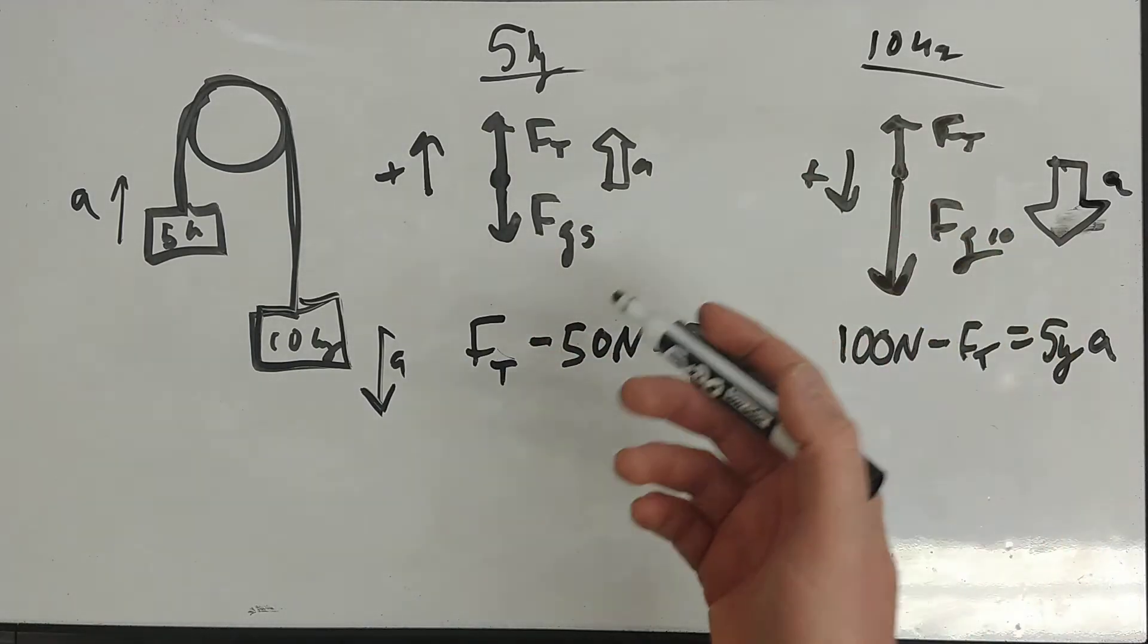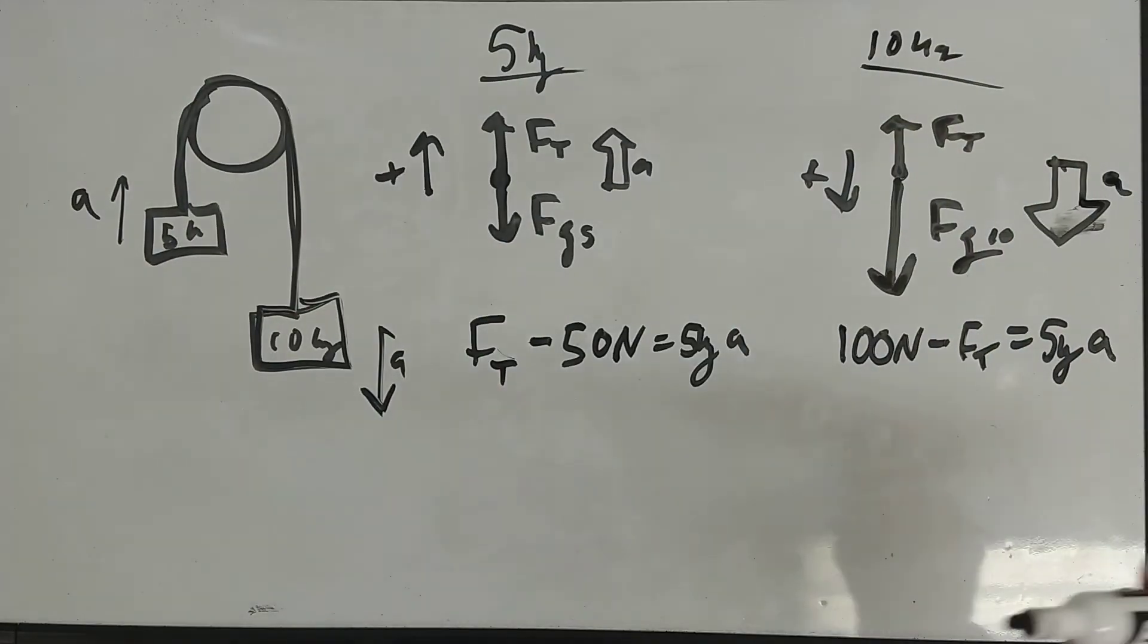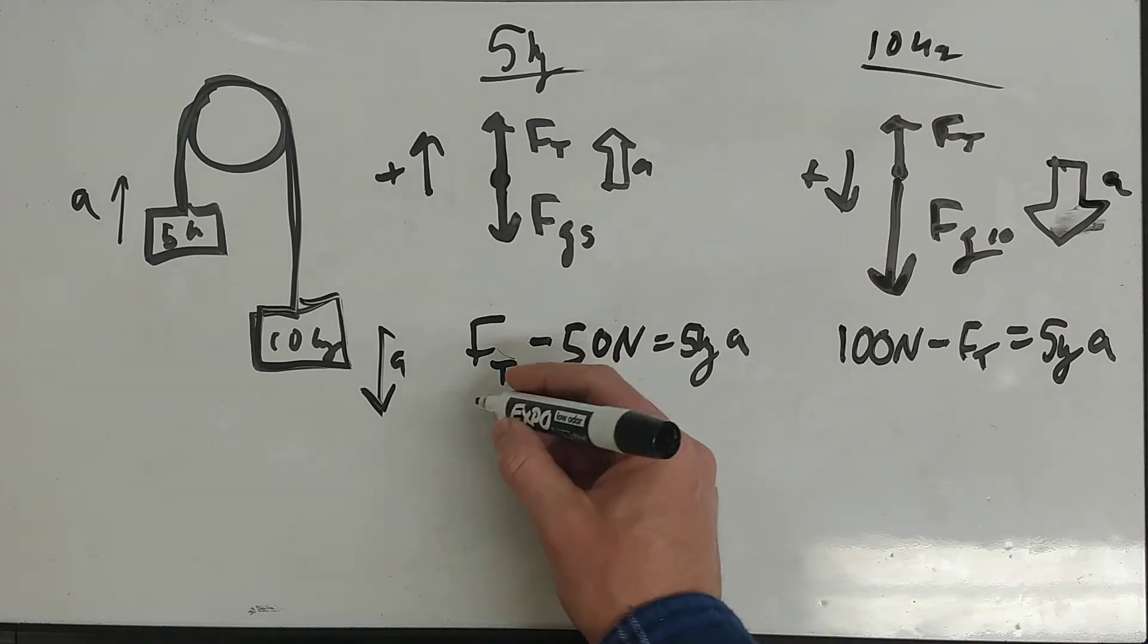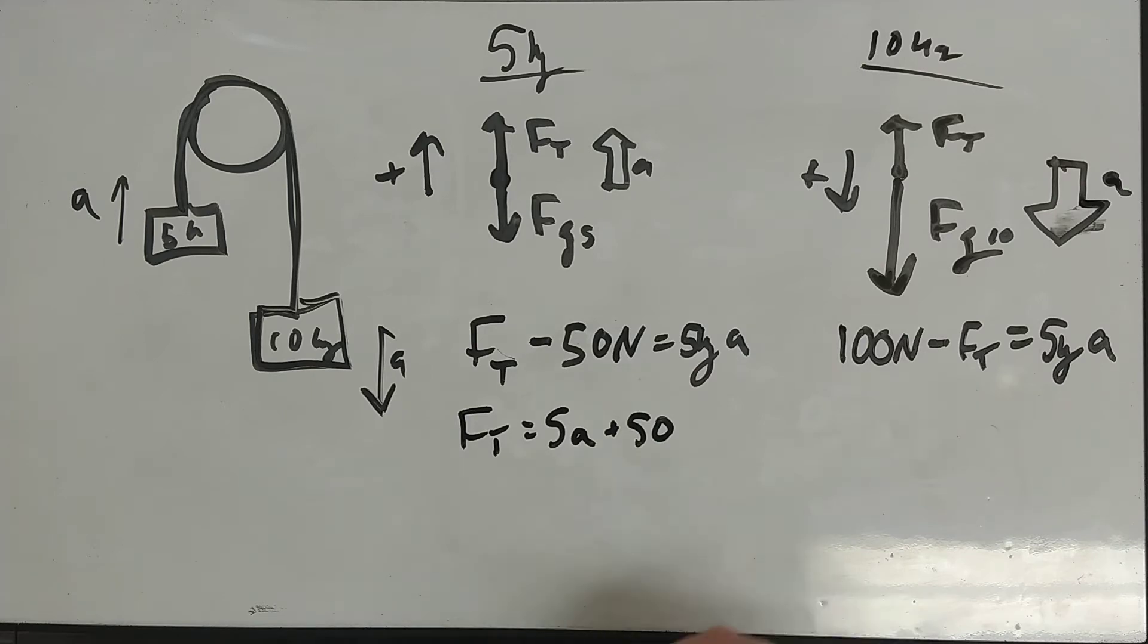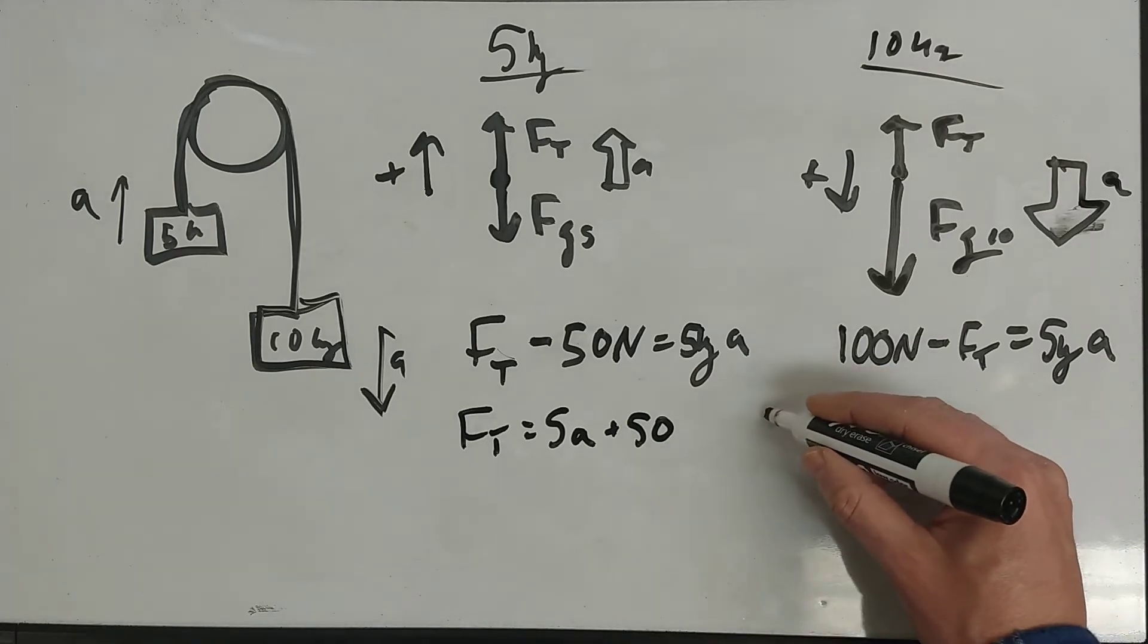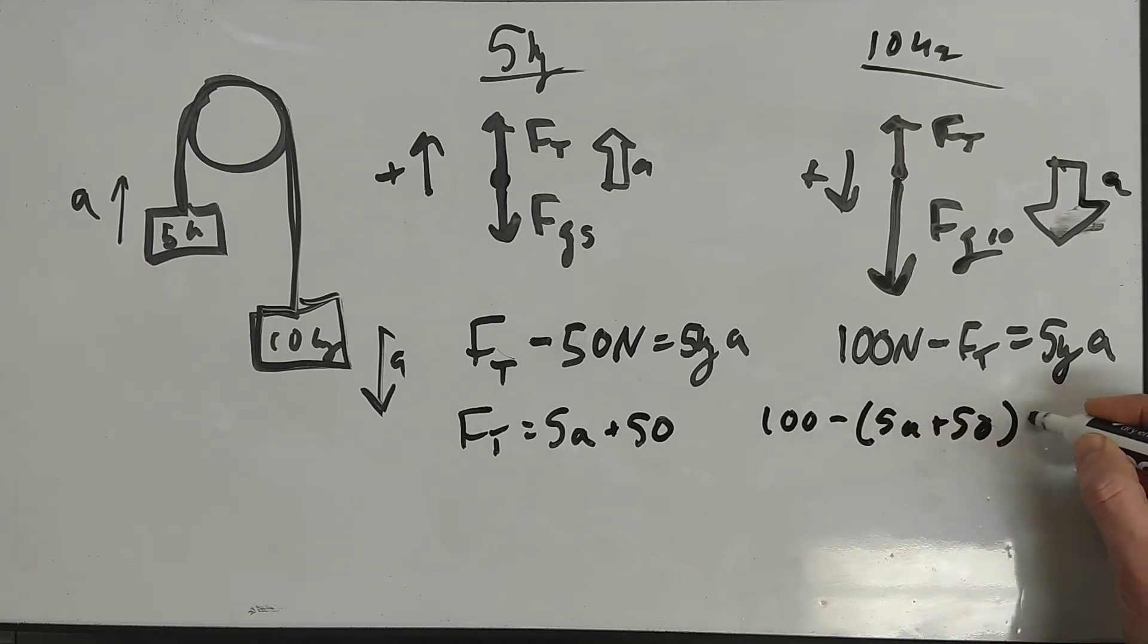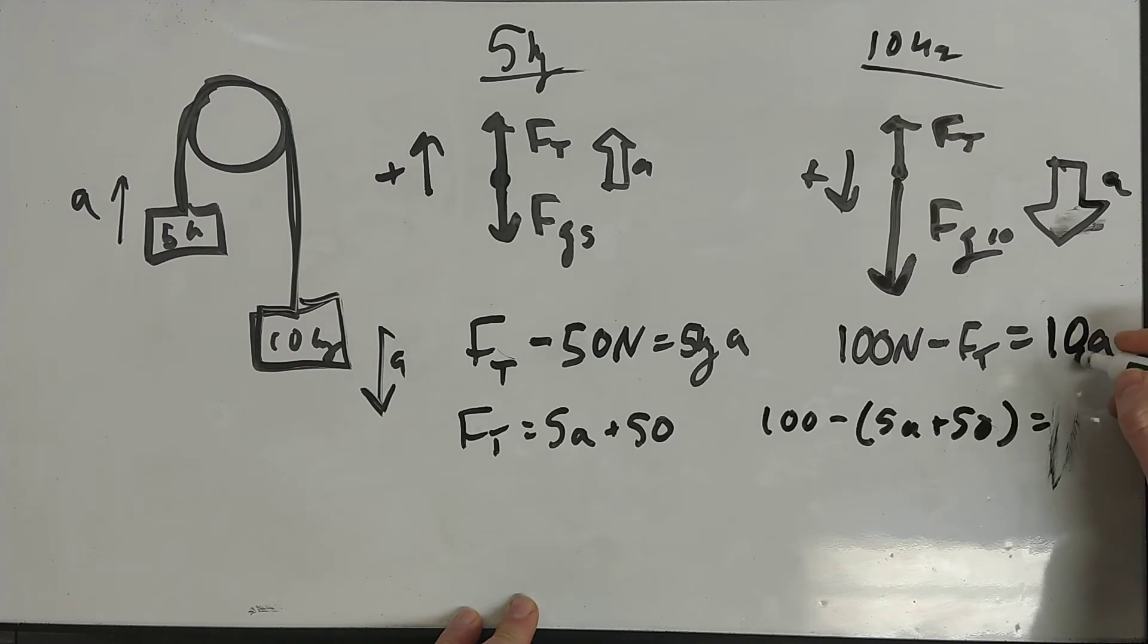I guess what I'm trying to solve for, I should have said, basically solving for everything. I'm going to find the acceleration of the system and the tension in the rope. So first things first, I'm going to solve one of these for tension and plug it into the other. So I guess I'll do it for this one. Ft equals 5A plus 50. So I drop the units at this point, no big deal. 100 minus 5A plus 50 equals, oops, I made a typo there. Good thing I got dry erase here. Equals 10 kilograms times A, 10A.